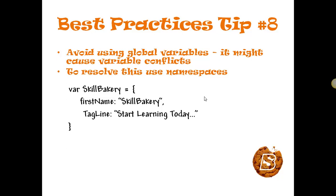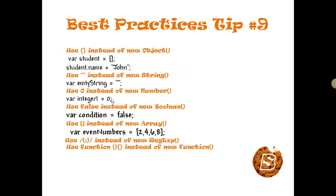We should always avoid using global variables because that might cause variable conflicts with other libraries. To resolve that, we should make use of namespaces. Using namespaces is simple: declare a variable using 'var' and assign it curly braces. Add variables inside with the format 'variableName: value', separating each with a comma, with no comma after the last one, then close the curly braces.